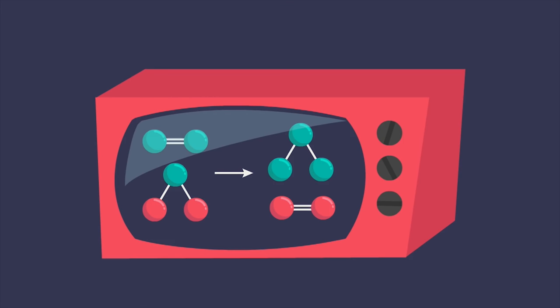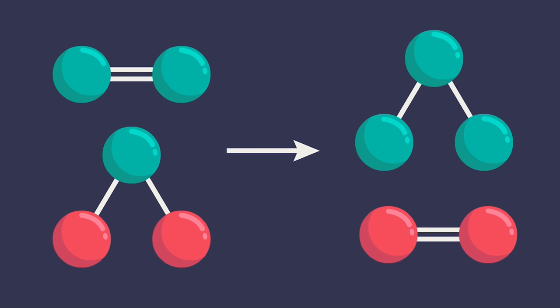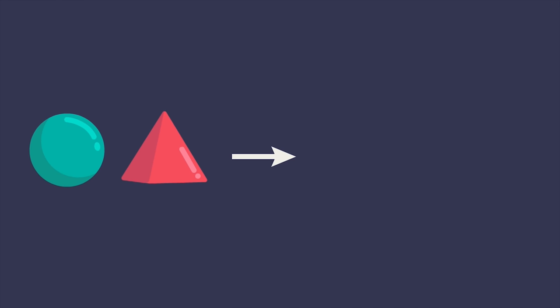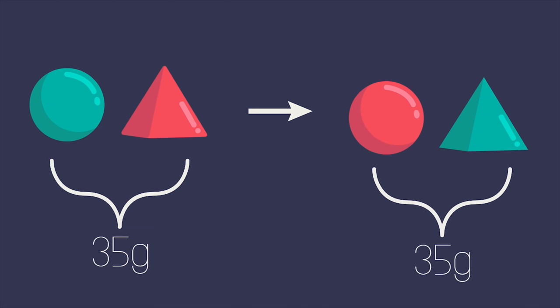You should know from previous videos that in any given reaction the total number of atoms making up the reactant and the product does not change. So it follows that the total mass of reactant will be the same as that of the product as mass is always conserved in a chemical reaction.